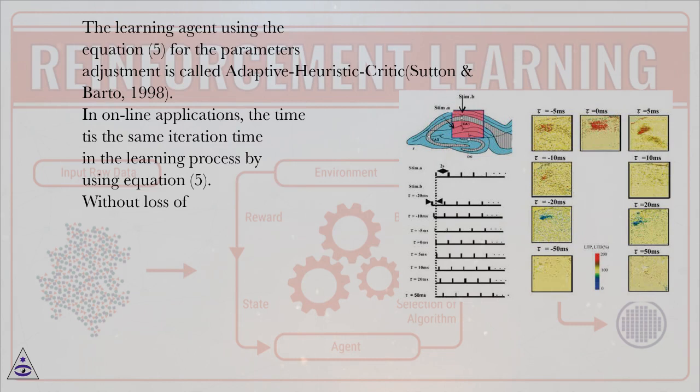The learning agent using equation (5) for the parameters adjustment is called adaptive heuristic critic, Sutton and Barto, 1998. In online applications, the time t is the same iteration time in the learning process by using equation (5), without loss of